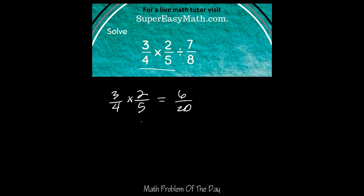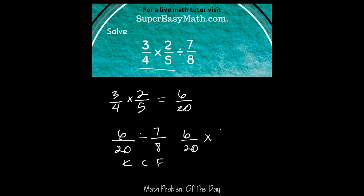Now my new problem is 6 over 20 divided by 7 over 8. Now I can keep it, change it, flip it. So I'm going to keep the first fraction the same — that's 6 over 20. Change the division sign, and then flip this, so this is 8 over 7.